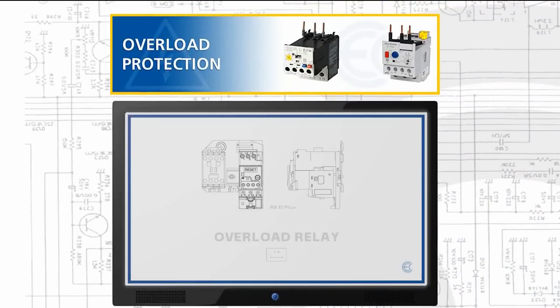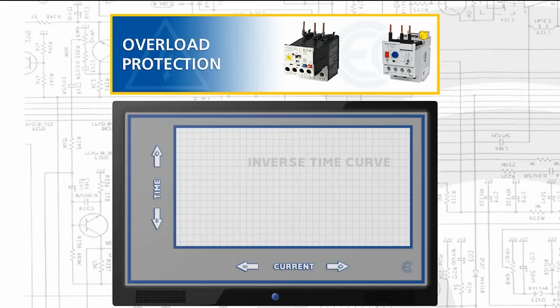Overload protection is protection against a running overcurrent that would cause overheating. Overload protection typically operates on an inverse time curve where the tripping time becomes less as the current increases. This means an overload relay isn't going to trip on momentary or short term overcurrent events that are normal for the piece of equipment it is protecting.